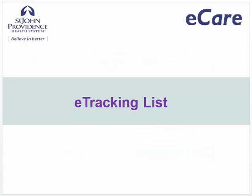The e-tracking list, also known as the FirstNet Organizer, is an interactive enhanced view of patients in the emergency department. There are a number of quick links to access portions of the chart with a single click. The columns allow you to see details just by resting your mouse cursor over an icon. The icons will vary by site and role.